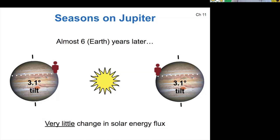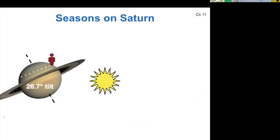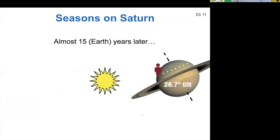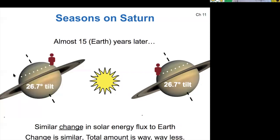But Saturn is tilted by a greater amount. So much later, it would experience a larger change in solar energy flux and a similar amount of change compared to its total or its average solar flux as earth. So even though the change as a fraction of the average would be similar, the total amount of flux that the gas giants receive is way, way less because they're so far away from the sun.